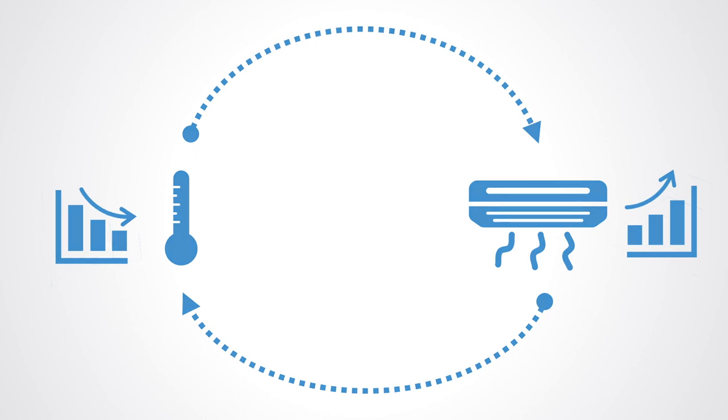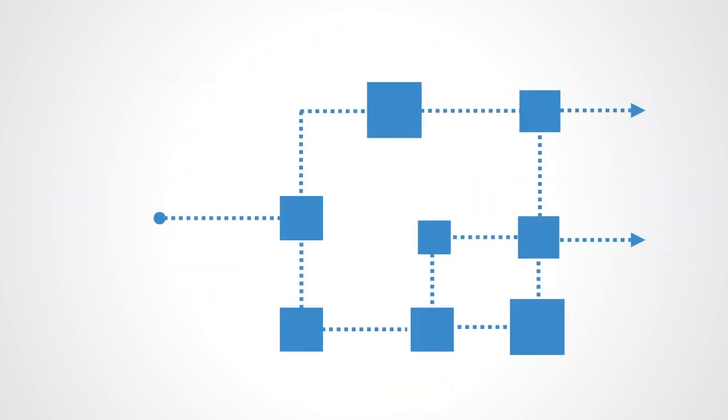To perform a more detailed quantitative analysis, a causal loop diagram is transformed into a stock and flow diagram, which helps in studying and analyzing the system quantitatively, typically through the use of computer simulations.